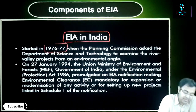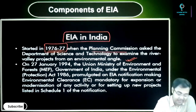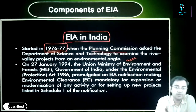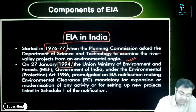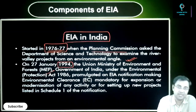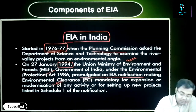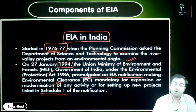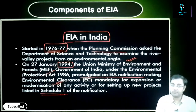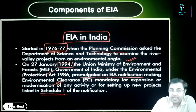After approximately 30 years of independence, for the first time the Planning Commission asked the Department of Science and Technology to examine river valley projects from an environmental angle. This kept on happening but there was no legislative support. Then in 1994, for the first time the Union Ministry of Environment and Forest promulgated an EIA notification making environmental clearance mandatory for expansion or modernization of any activity, or for setting up new projects listed in Schedule 1 of the notification — for example, mining activities had to undergo clearance before being started.